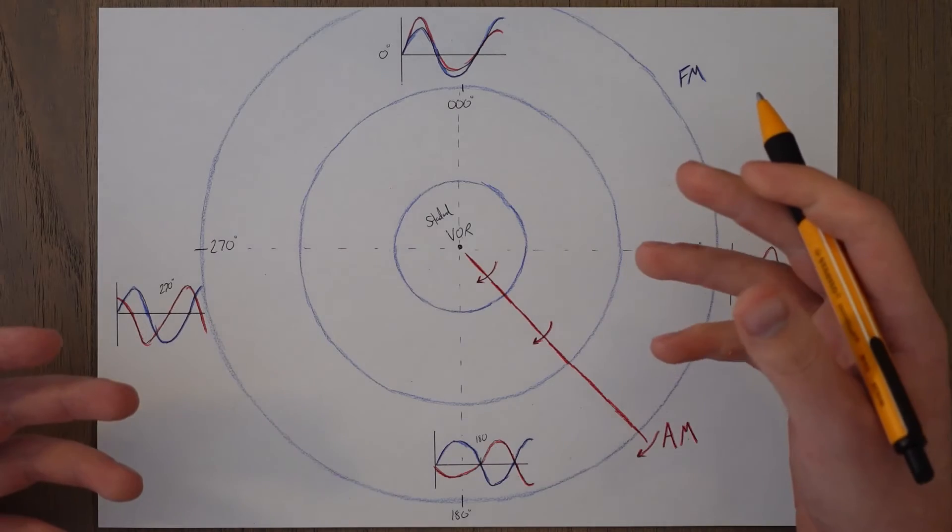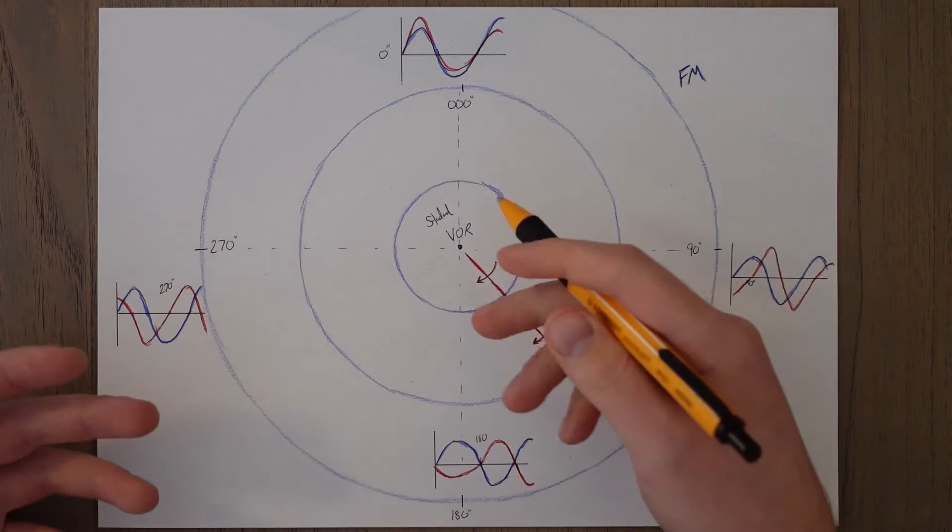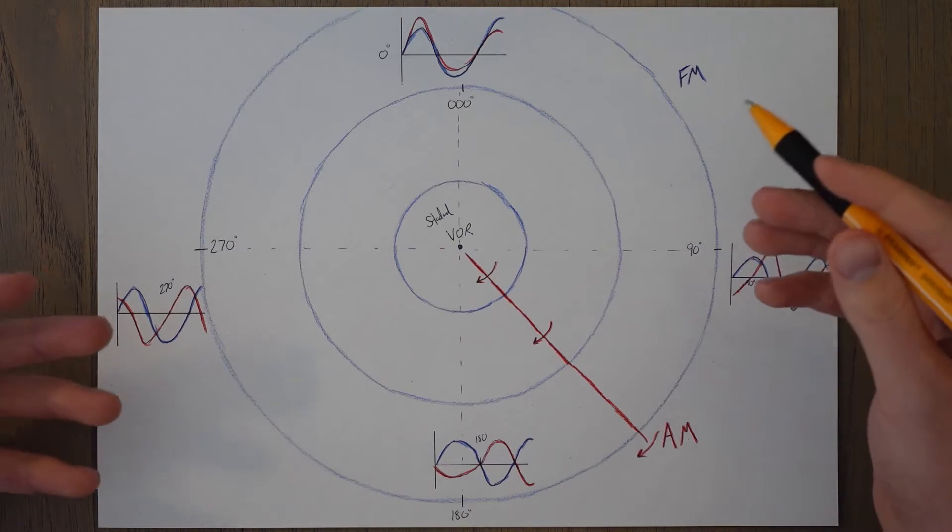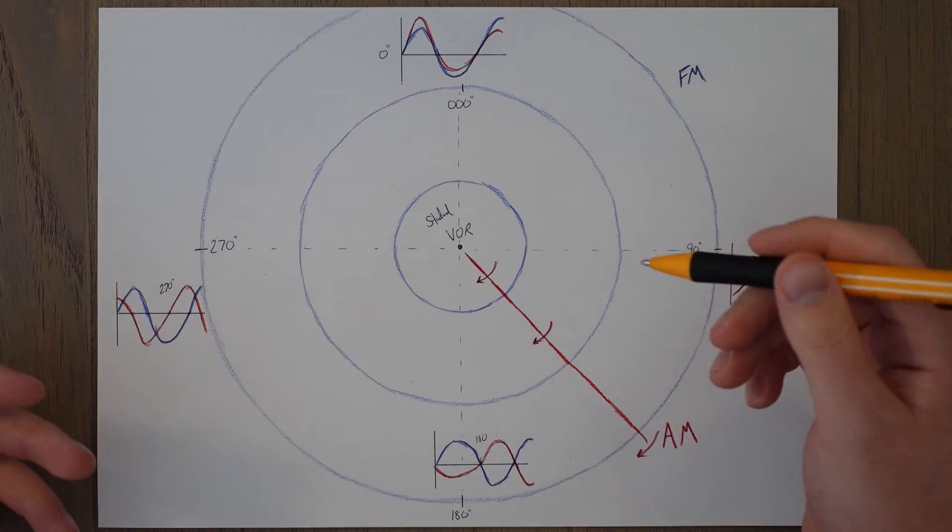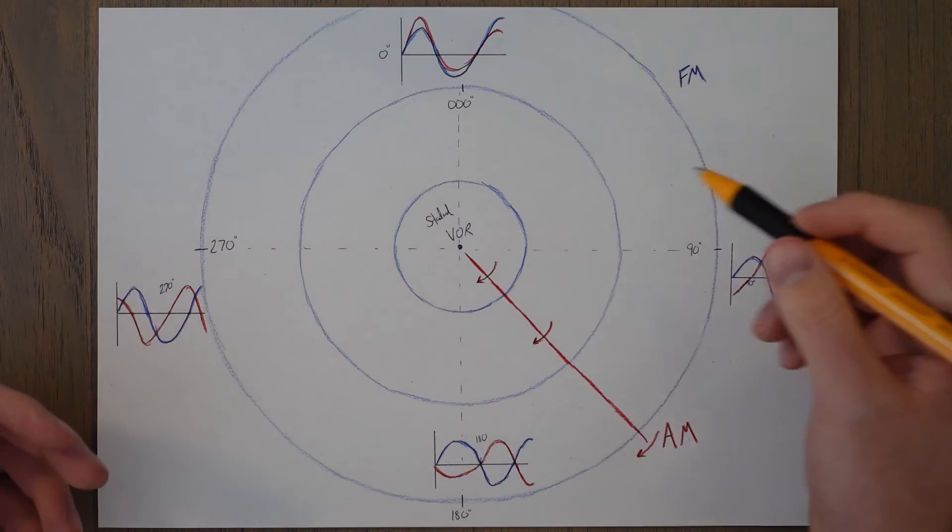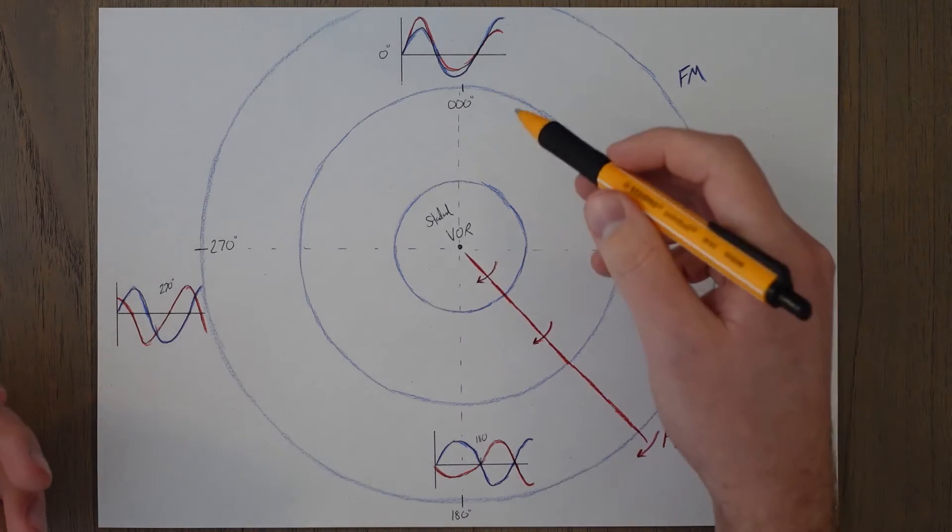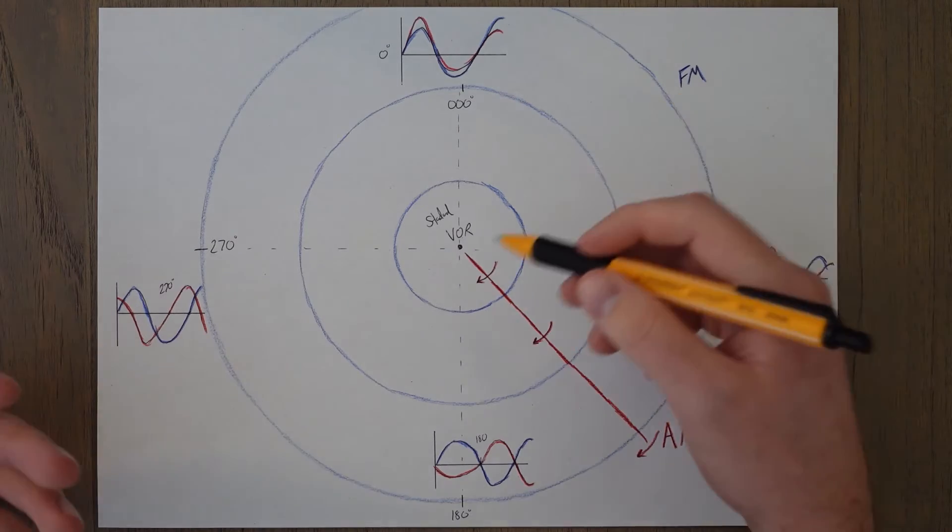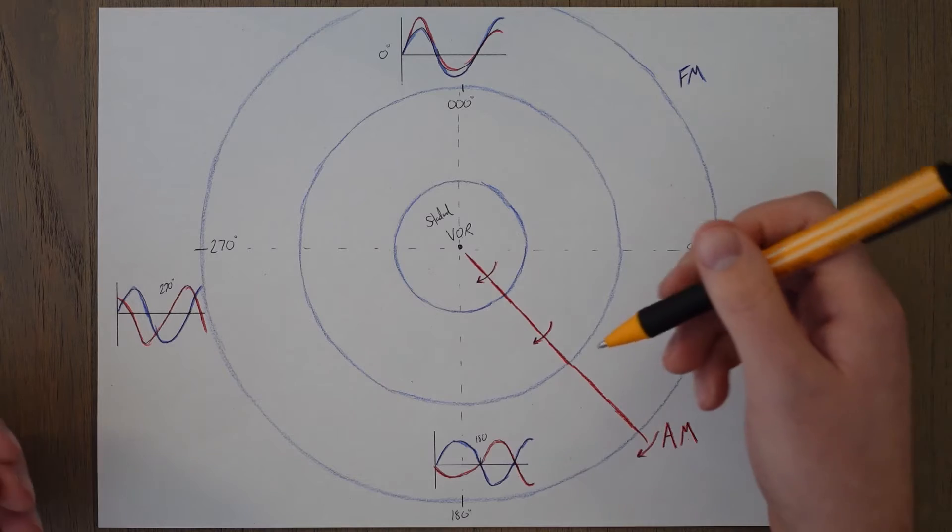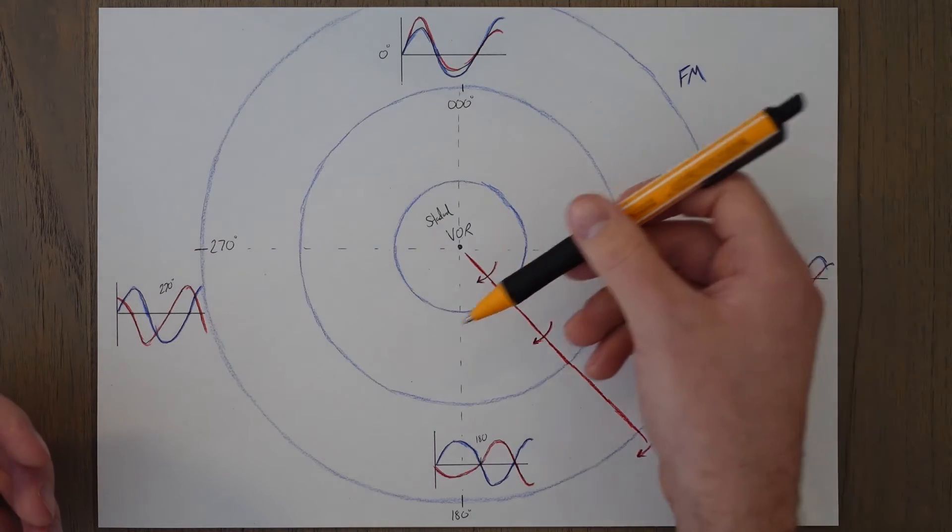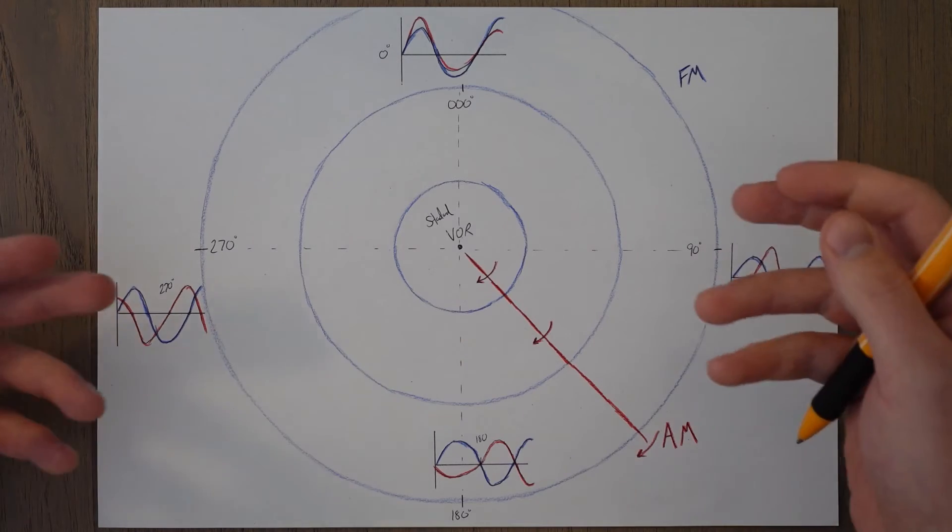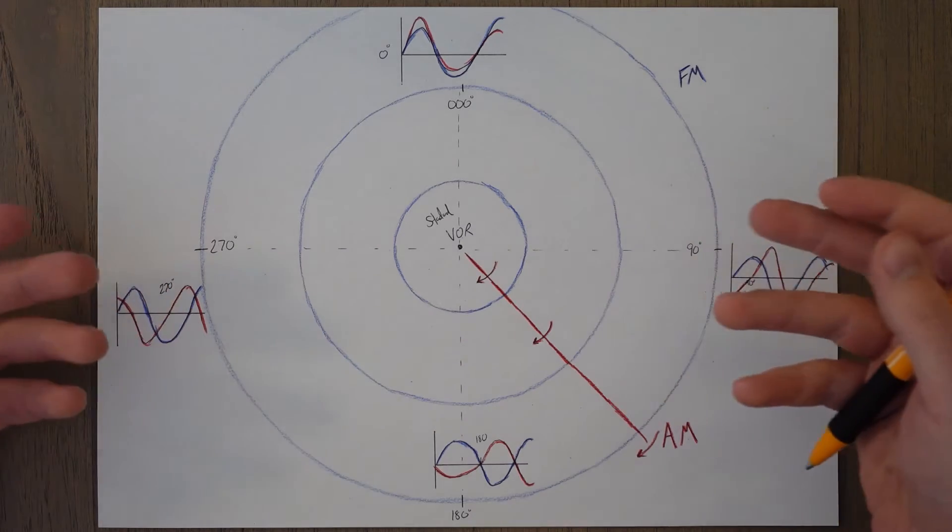This phase difference between the spinning AM signal and the stationary reference FM signal is what the aircraft actually detects, and then we have 360 distinct, separate signals that we can tune into. Think of it like the spokes on the wheel of your bike. We can select which one we want to choose and follow it precisely. This means it's better than an NDB, as we can lock into a specific radio coming off of the VOR.